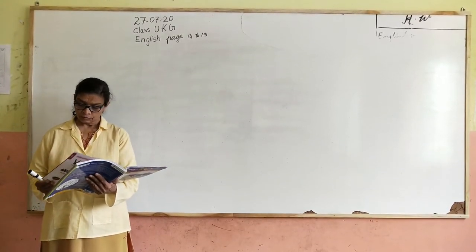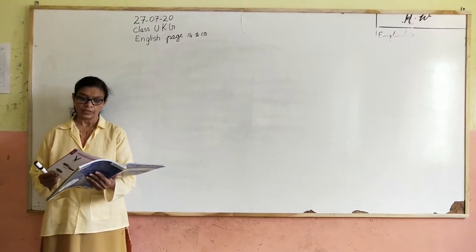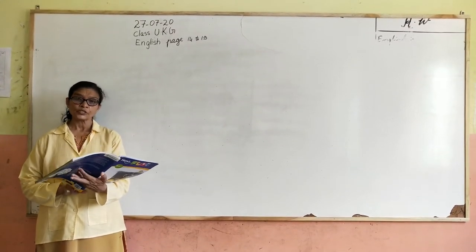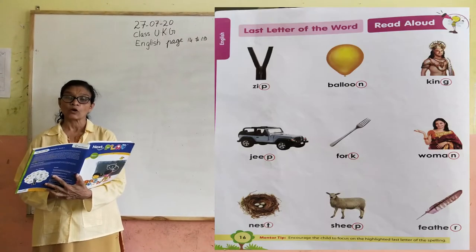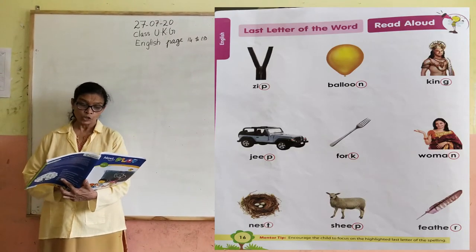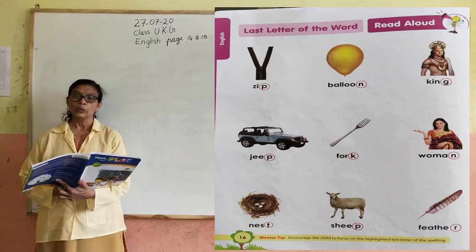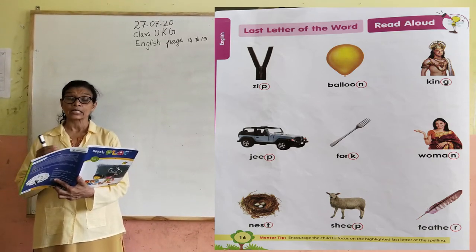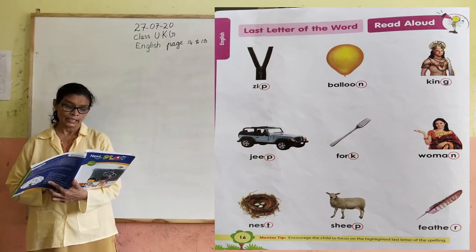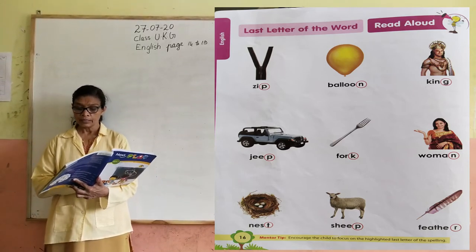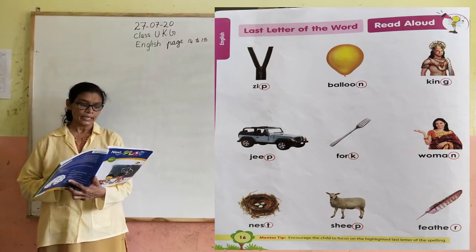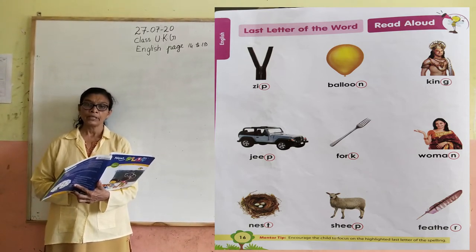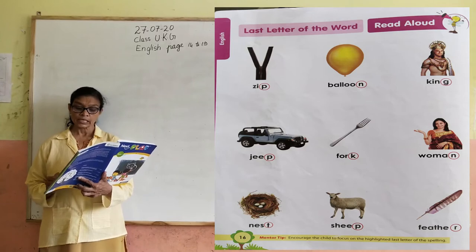Now, you write down pages 49 and 15 in your book. Next page, last letter of the word — you have to write the last letter of the picture given. The letters shown are Z, I, C, P — last letter.